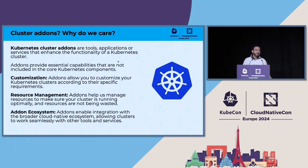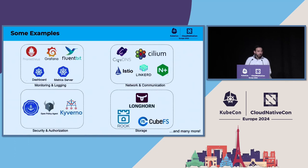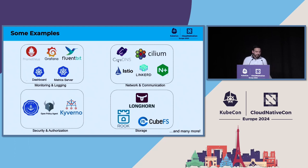You also have an add-on ecosystem. These add-ons are meant to interact with one another in some cases. So when we are validating, we need to check that these integrations between add-ons are working as expected. Some examples of cluster add-ons grouped by category include: monitoring and logging, networking and communication, security and authorization, and storage.